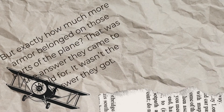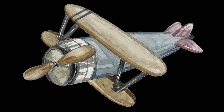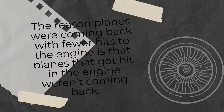It wasn't the answer they got. The armor, said Wald, doesn't go where the bullet holes are — it goes where the bullet holes are not, on the engine. Wald's insight was simply to ask: where are the missing holes, the ones that would have been all over the engine casing if the damage had been spread equally over the plane? Wald was pretty sure he knew. The missing bullet holes were on the missing planes. The reason planes were coming back with fewer hits to the engine is that planes that got hit in the engine weren't coming back. Whereas the large number of planes returning with thoroughly Swiss-cheese fuselages is pretty strong evidence that hits to the fuselage can, and therefore should, be tolerated.